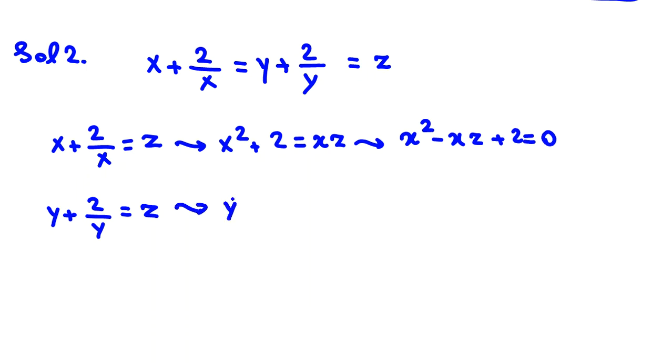If we do the same way similarly, we multiply by y. It will be y squared plus 2 equals zy. And then, we can say y squared minus yz plus 2 equals zero.